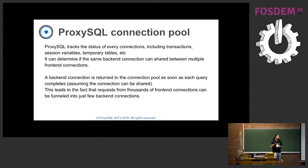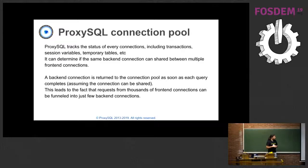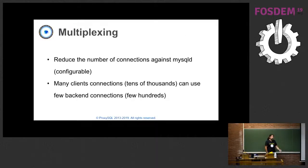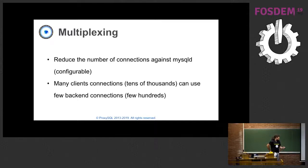If it is safe, it goes back to the connection pool so the next client request can be executed using that specific backend connection. Basically what we can have is thousands of frontend connections funneled into very few backend connections. This is how ProxySQL performs multiplexing - you can define the number of backend connections while the number of frontend connections can be extremely higher.